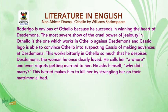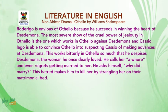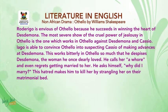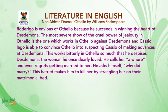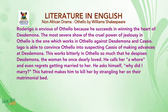Iago is able to convince Othello into suspecting Cassio of making advances at Desdemona. This works bitterly in Othello so much that he despises Desdemona, the woman he once dearly loved. He calls her a whore and even regrets getting married to her. He asks himself, and I quote, 'Why did I marry?' This hatred makes him kill her by strangling her on their matrimonial bed.